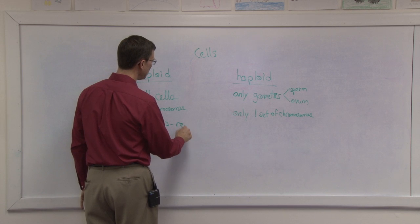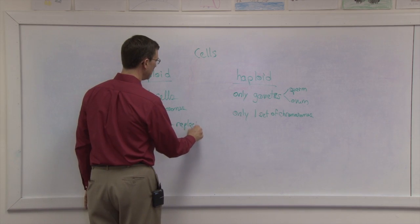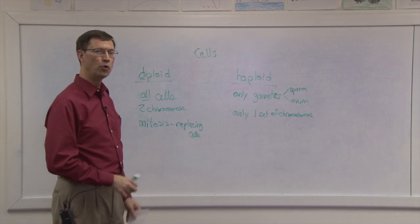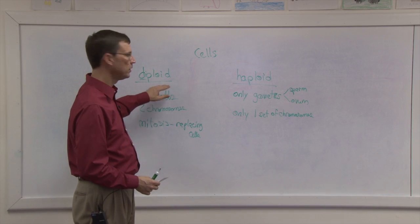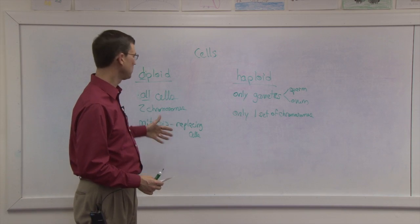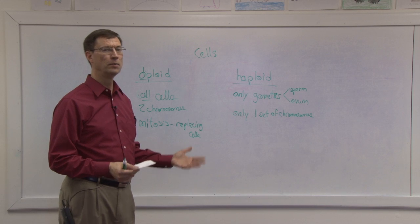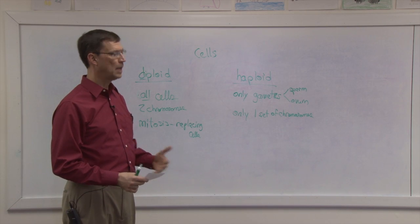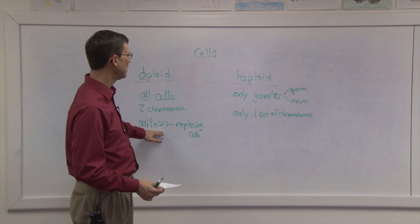This is for the process of replacing cells. And the cells that are formed are exactly like the original cells. So we start with what's called the mother cell, and then the results are called daughter cells. But they are exactly like the original cell. That's mitosis.